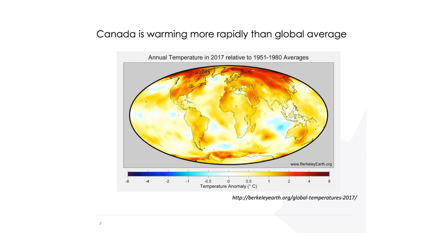This is basically that same data set shown in map form, displaying annual temperature in 2017 relative to the 1950–1980 average. It illustrates that the warming seen in the previous plot — the global mean change — is not uniform across the globe. There are places warming more and places warming less than the global average. Focusing on North America and Canada in particular, the redder colors indicate more warming.